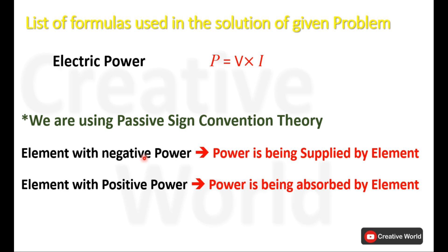We will also be using passive sign convention theory. According to this theory, the elements with negative power will be considered as power suppliers and the elements with positive power will be considered as power absorbers.